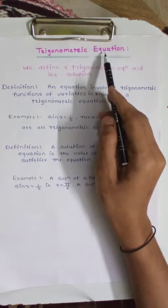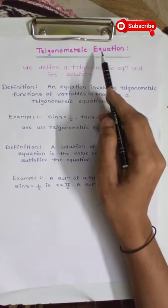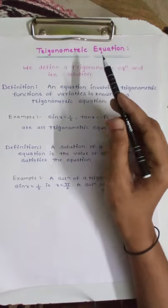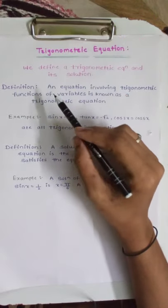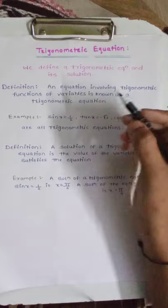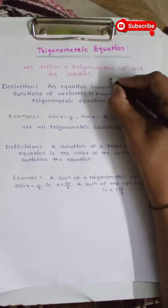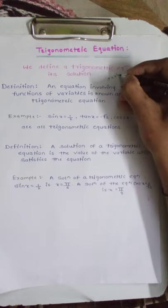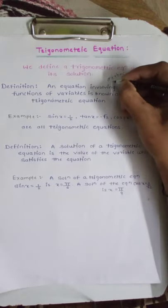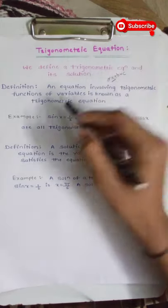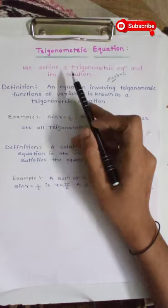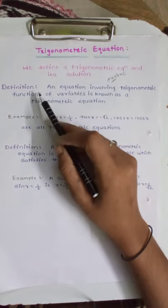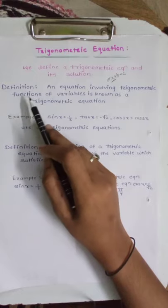An equation is a linear combination of variables and some constants. There are different types of equations. In an algebraic equation, it contains some algebraic function like ax plus b is equal to c. This is the algebraic function, but in this case we study the trigonometric equation.